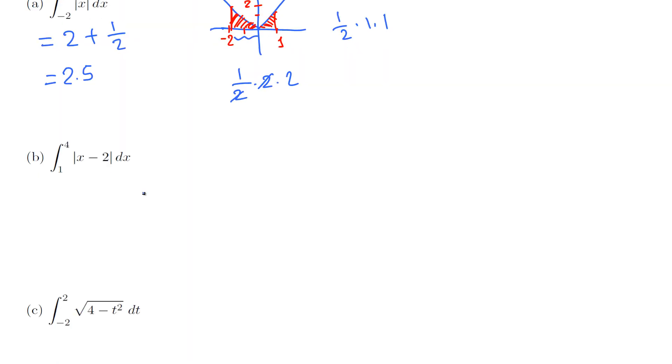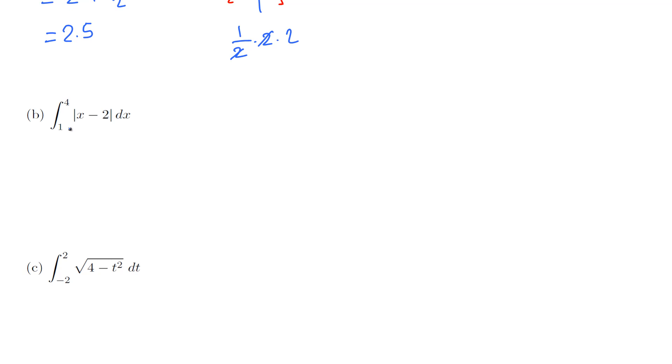Let's go for number 2. Here the function is |x - 2|. Using the graphing calculator, this is like |x| but the vertex is shifted 2 units to the right. We are integrating from 1 through 4.